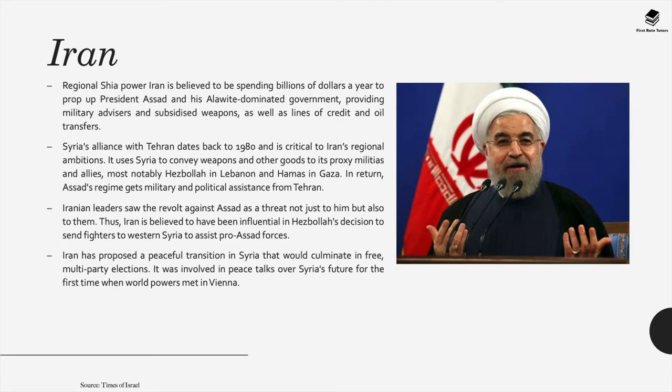Iranian leaders saw the revolt against Assad as a threat not just to him but also to themselves. Thus, Iran is believed to have been influential in Hezbollah's decision to send fighters to western Syria to assist pro-Assad forces. Iran has also proposed a peaceful transition in Syria that would culminate in free multi-party elections, and was involved in peace talks over Syria's future for the first time when world powers met in Vienna.